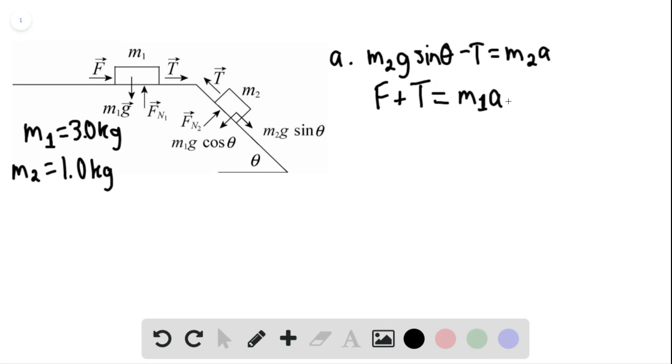Again, these two are connected. Therefore, they're going to have the exact same acceleration. We're going to add these two together and then solve for the acceleration of the system. So we can say the acceleration will equal m sub 2 g sine of theta plus F, divided by m sub 1 plus m sub 2.